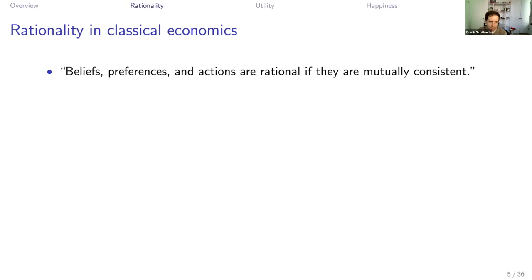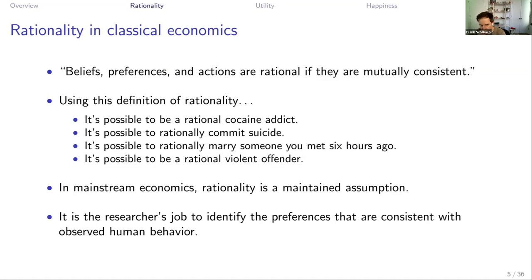So what is rationality in classical economics? Broadly, we think that beliefs, preferences, and actions are rational if they are mutually consistent. We see certain behaviors and actions, we can measure people's beliefs, and we can essentially find preferences that rationalize these actions. That's a very broad definition — without it, we can essentially say it's possible to be a rational cocaine addict, possible to rationally commit suicide, possible to rationally marry somebody you met six hours ago, or to be a rational violent offender.